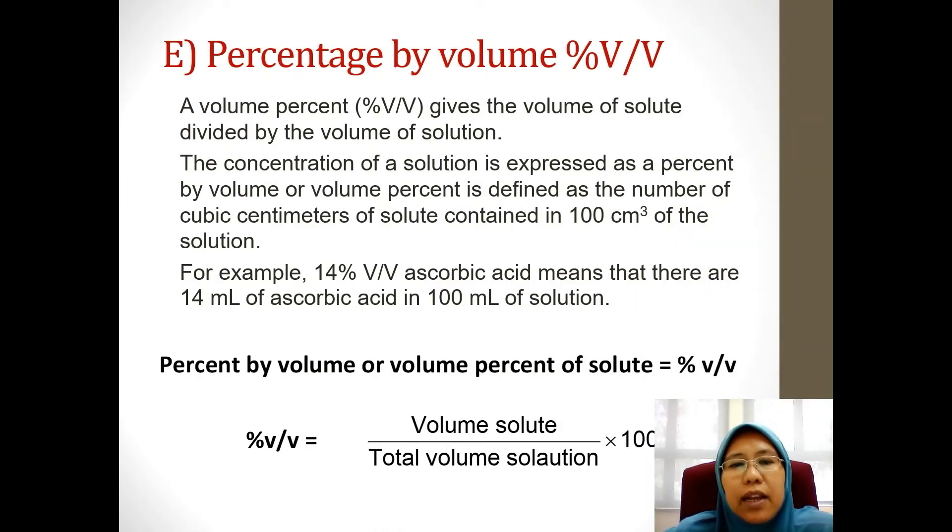Finally, the last one is percentage by volume. The concentration of a solution here is expressed as a percent by volume. It is defined as the number of ml of solute contained in 100 ml of a solution. For example, if you have 14% volume over volume ascorbic acid, it means that there are 14 ml of ascorbic acid in 100 ml of solution. So shown to you is the formula.